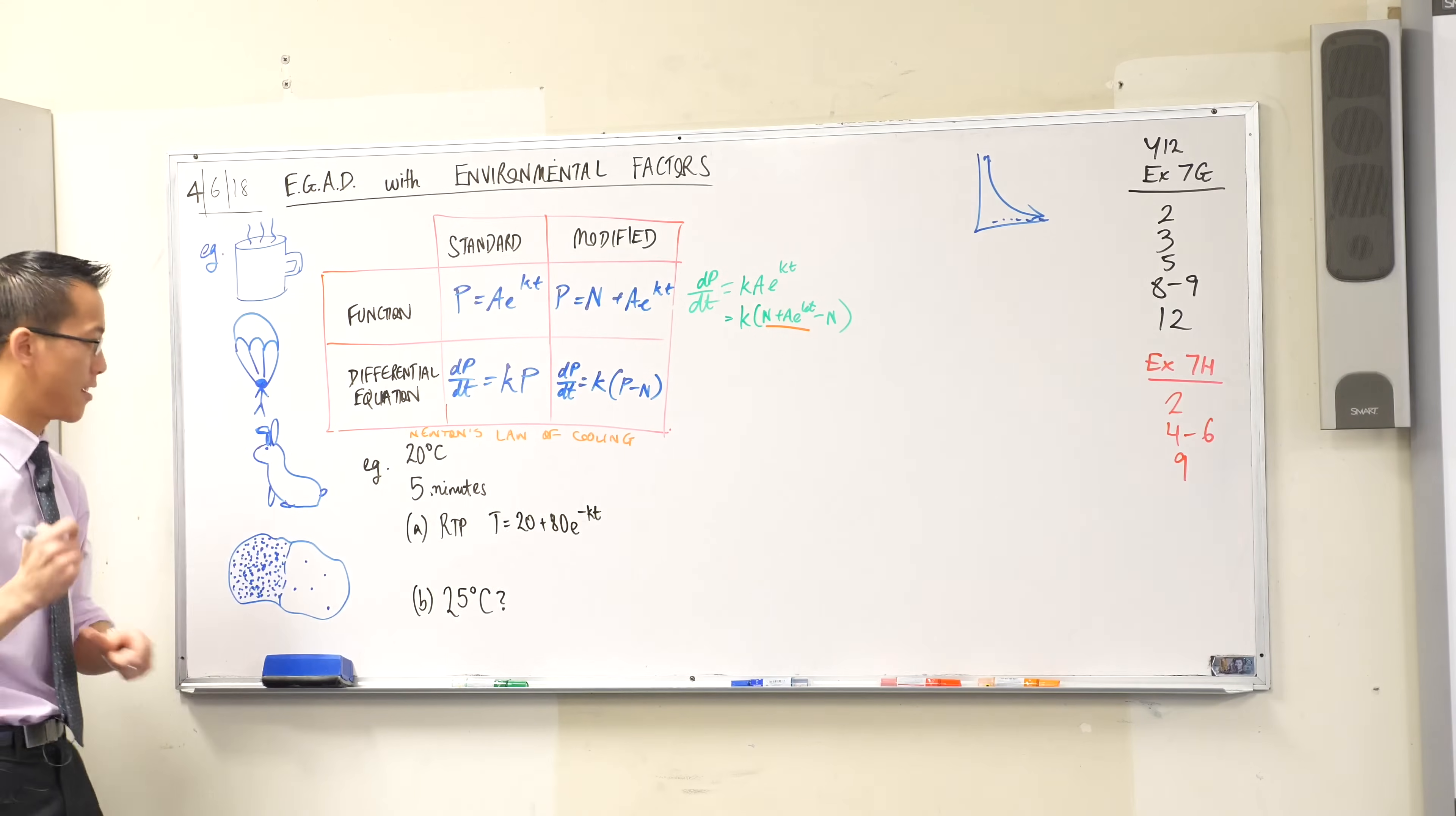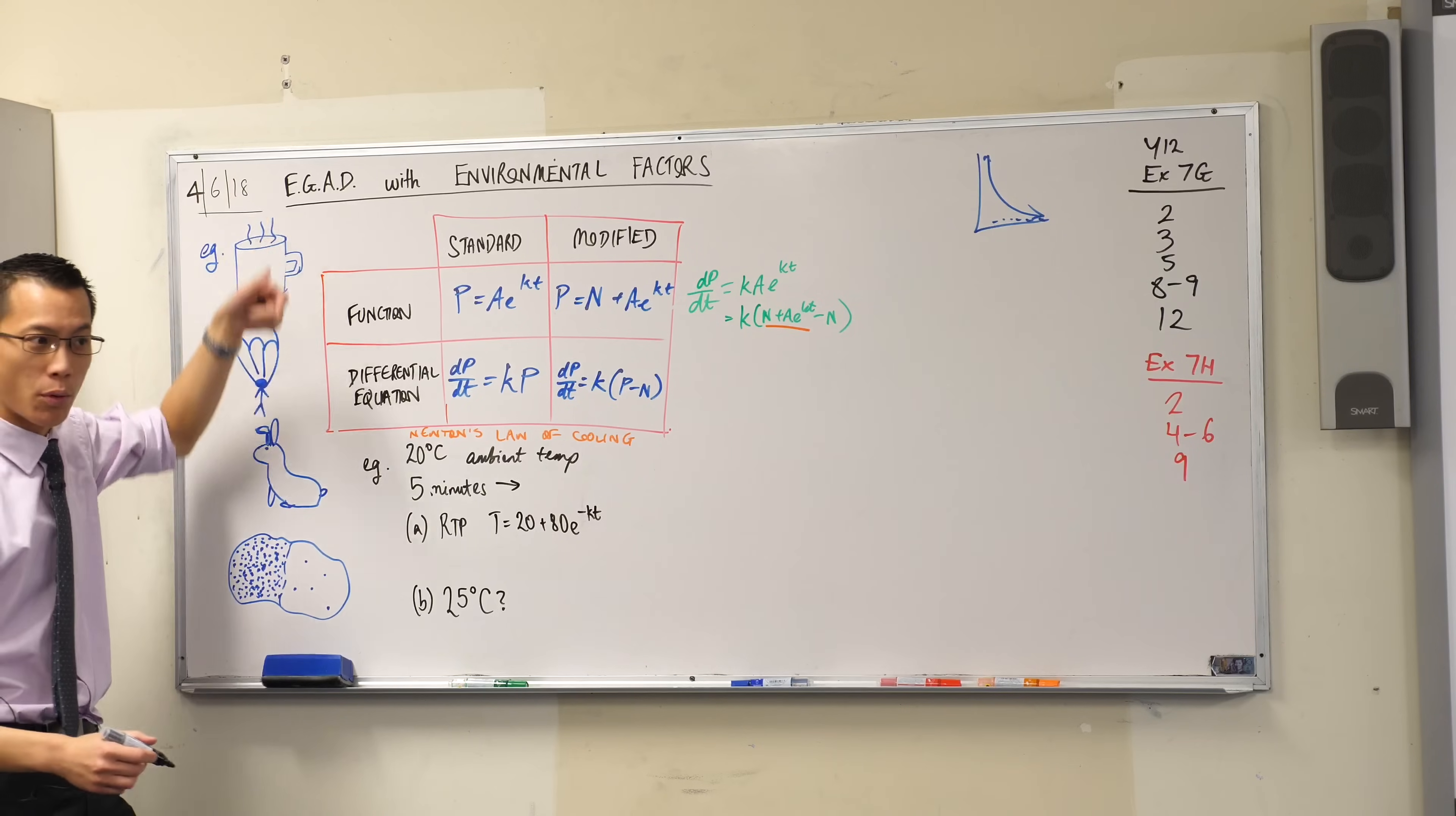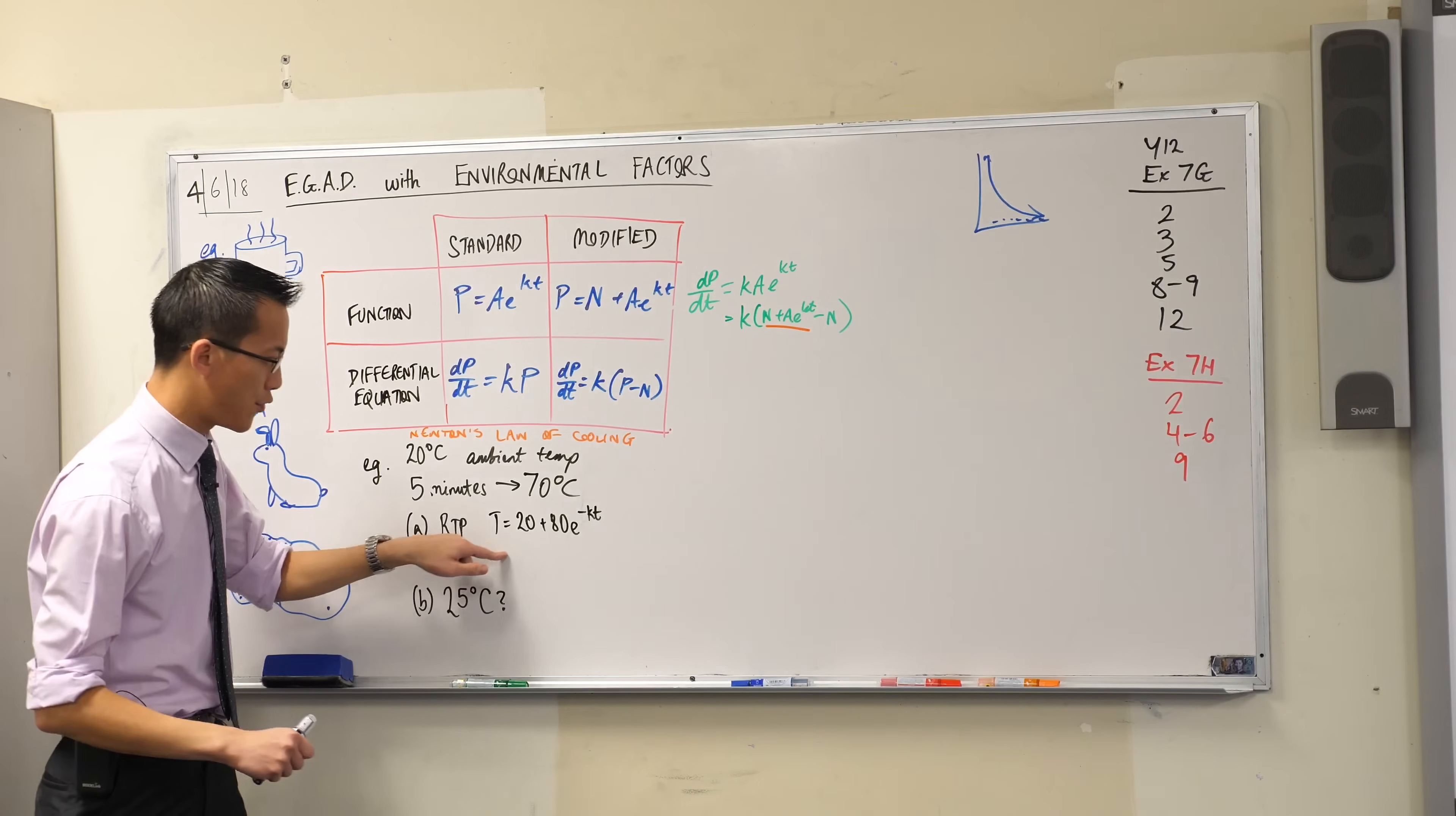I've given you some facts here. Let's fill this information in. If it's a 20 degree day, 20 degrees is the ambient temperature in normal space. Suppose you boil some water and after 5 minutes of cooling you pour it into a cup. After 5 minutes it hits 70 degrees, so it's cooled down substantially.